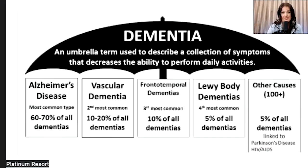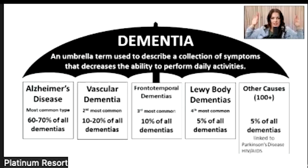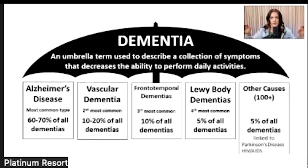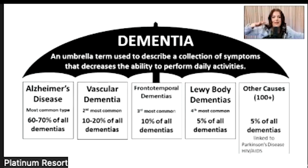This is my favorite visual of dementia because it literally is an umbrella. Dementia is a general term to describe a decrease in cognitive function. So under the umbrella, there are many different forms of dementia.